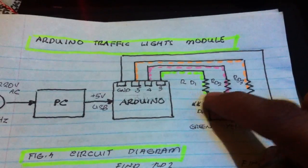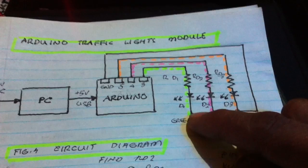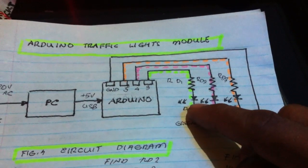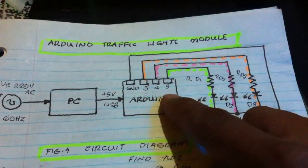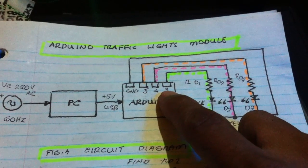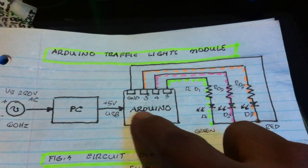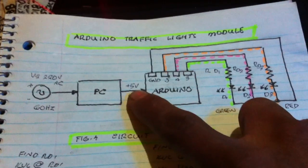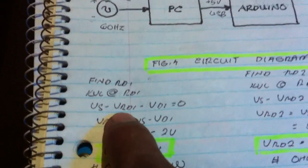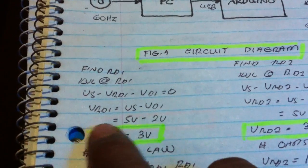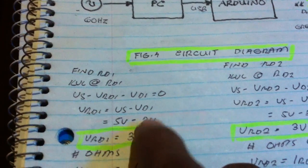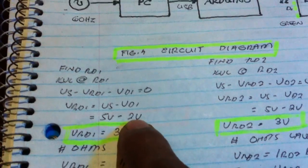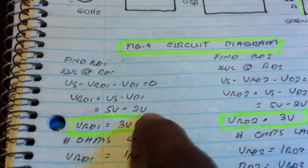We have this timing of the circuit: green, yellow, red. We need to compute the values of the resistor in series with the LED to prevent damaging the LED. Using KVL at terminal 3, which supplies 5 volts from the Arduino: voltage supply minus the voltage drop at the resistor and diode — the diode drop is 2 volts, given by the LED datasheet.